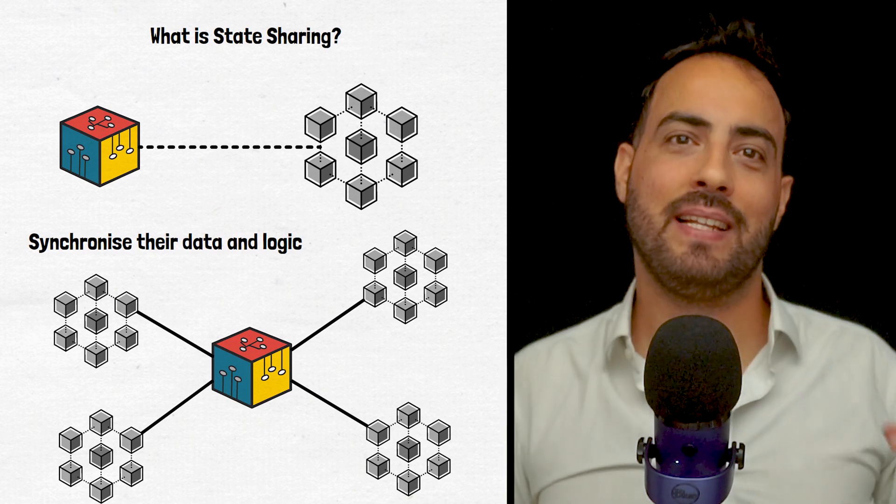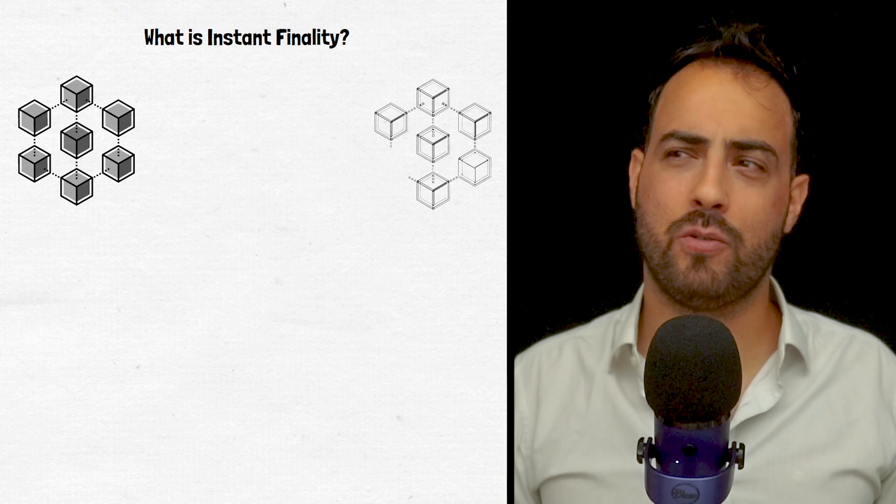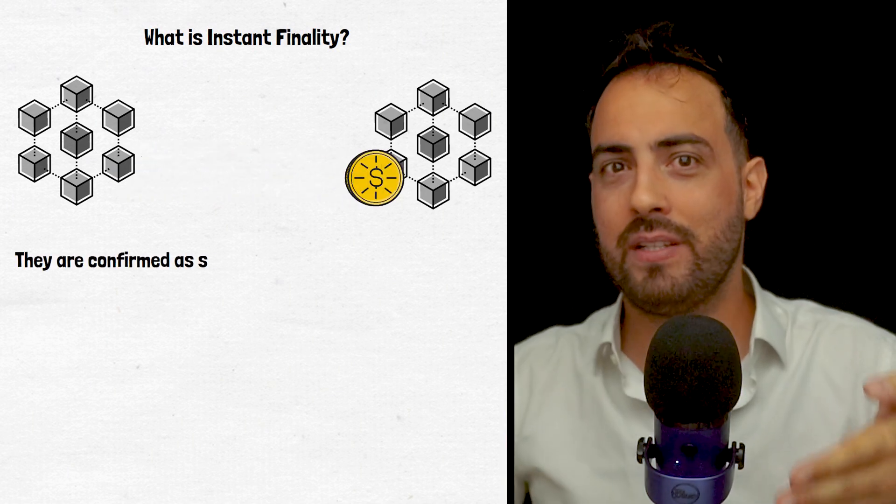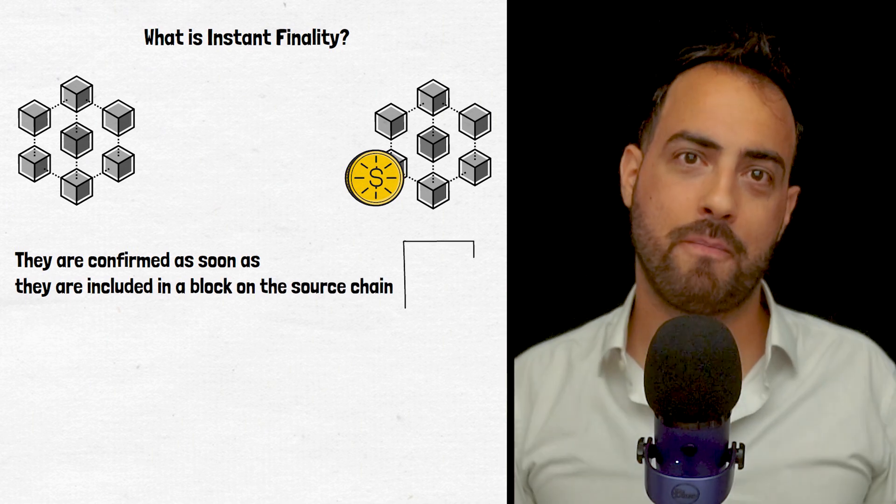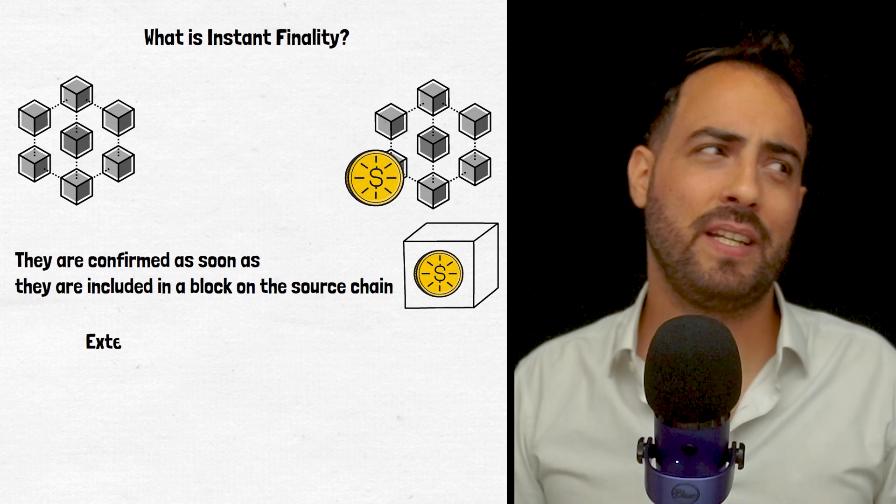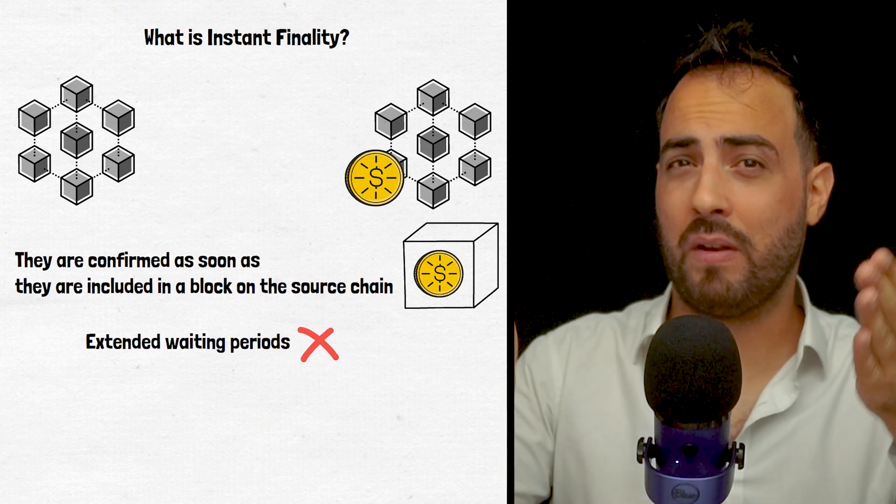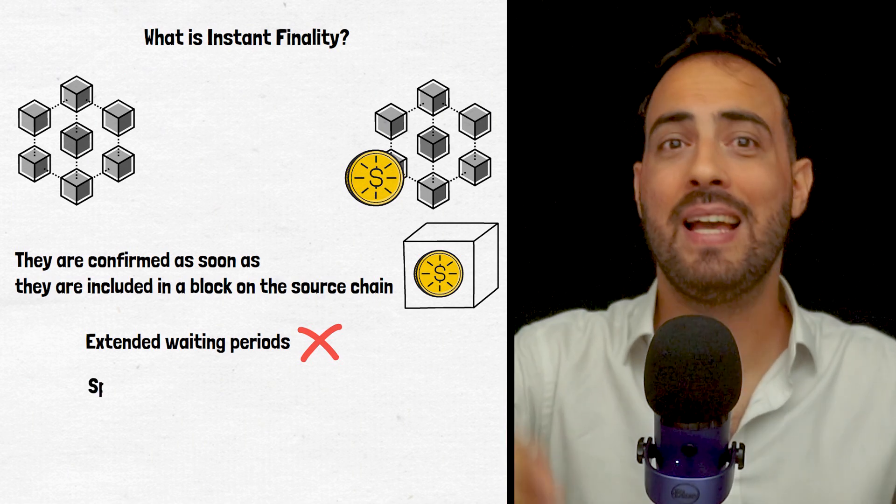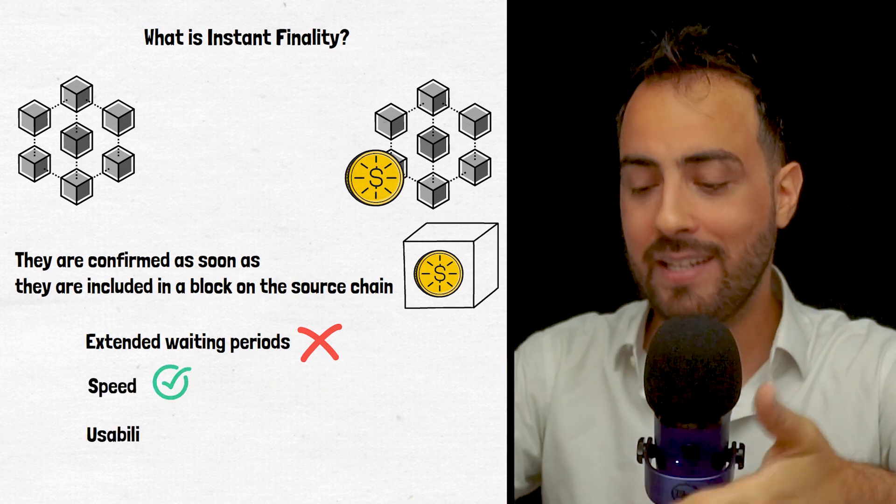Finally, there is instant finality, which guarantees instant finality for cross-chain transactions, meaning they are confirmed as soon as they are included in a block on the source chain. This removes any inconvenient or extended waiting periods for confirmations on the destination chain, ultimately improving speed, usability, and the end user experience.